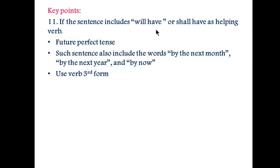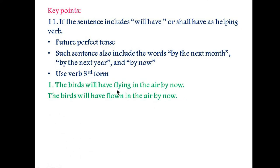Key point number eleven: if the sentence includes 'will have' or 'shall have' as a helping word, then this sentence is future perfect tense. Such sentences also include words like 'by the next month', 'by the next year', or 'by now'. You will use the verb third form. For example, 'The birds will have flying in the air by now' is incorrect. 'The birds will have flown in the air by now' is correct — you are using 'flown', which is the third form.